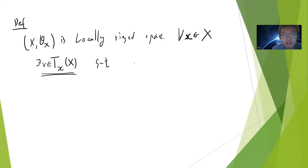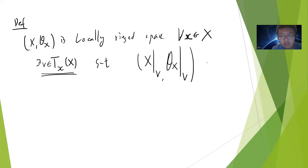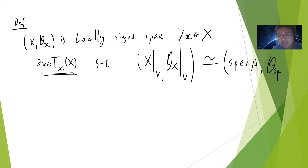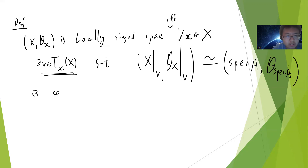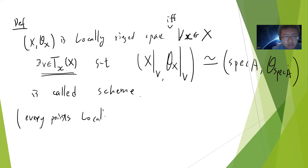There is an open set V such that when you restrict X to V, and O restricted to V, this gives an isomorphism of ring spaces to an affine scheme. So basically this is the scheme — X, O is a local ring space, and it's called a scheme if there exists such an open cover.